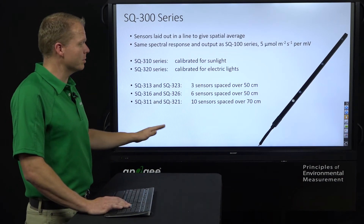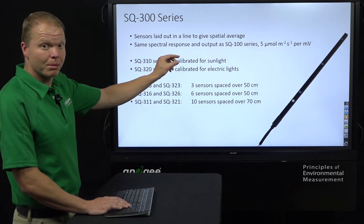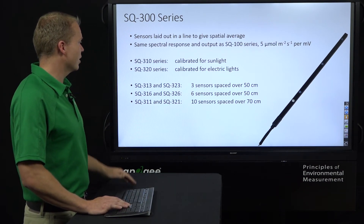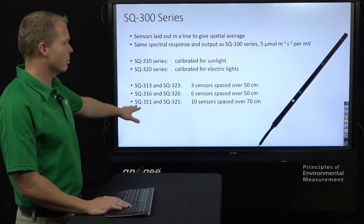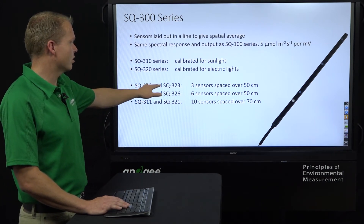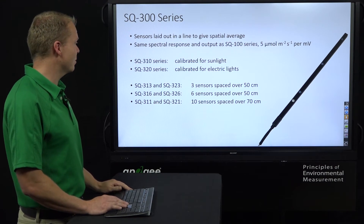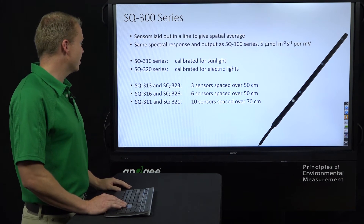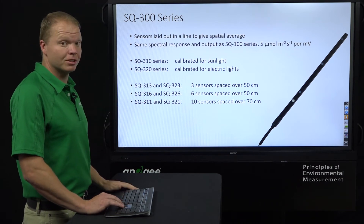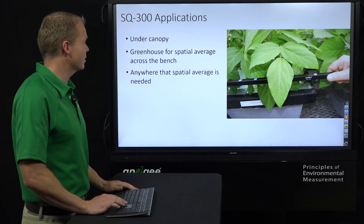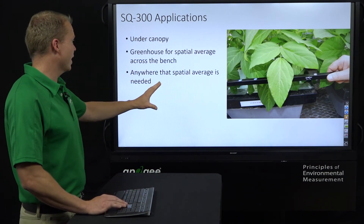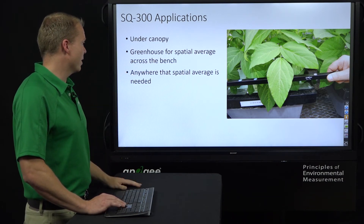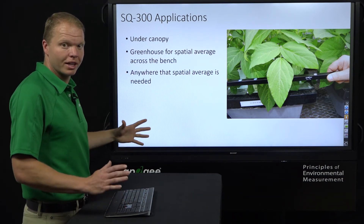The SQ300 has the same sensor as the 100 and 200 series, but placed in a light bar so you can get spatial averages. The 310 is for sunlight and the 320 for electric light. The 313 and 323 have 3 sensors spaced over 50 centimeters; the 316 and 326 have 6 sensors over 50 centimeters; and the 311 and 321 have 10 sensors spaced over 70 centimeters. You can use it under a canopy, on a bench, or anywhere you want that spatial average.